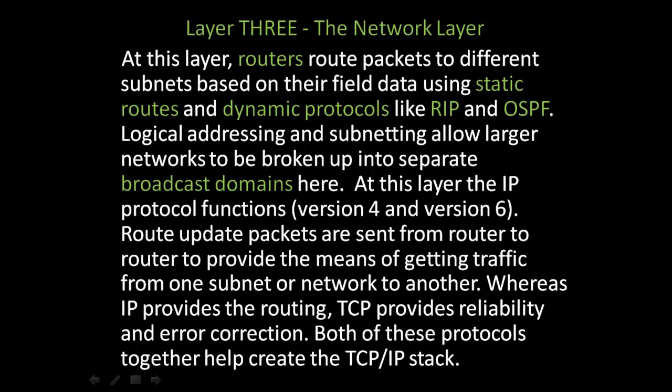Logical addressing and subnetting allow larger networks to be broken up into separate broadcast domains. At layer 3, broadcast domains are broken up, and at lower layers, collision domains are broken up. At this layer, the IP protocol functions — both version 4 and version 6. IP provides the routing, while TCP provides reliability and error correction. Both together help create the TCP/IP stack.